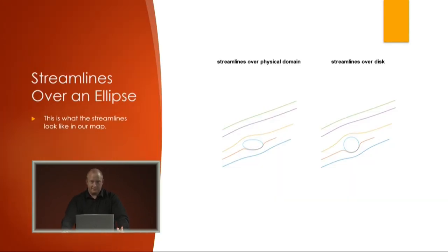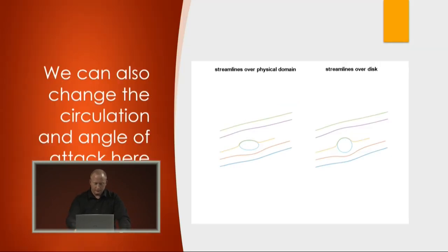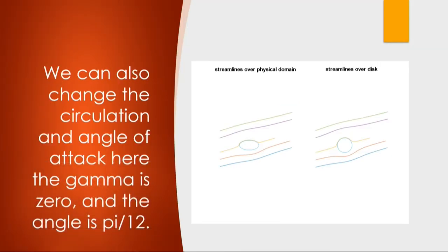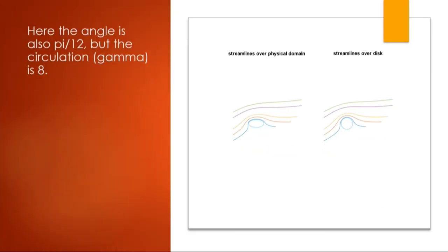Here's an example of streamlines over an ellipse. Now here, we can change the angle of attack and our gamma, which is our circulation. Here, our angle of attack is pi over 12, and our gamma is 0, so no circulation.